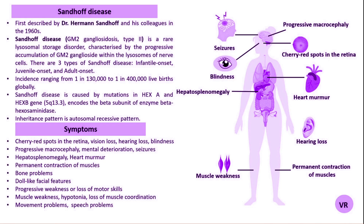Individuals with Sandhoff disease will have abnormally low or absent activity of both enzymes. Diagnosis often involves measuring the activity of HexA and HexB enzymes in blood or tissue samples; reduced enzyme activity indicates Sandhoff disease. Analysis of urine for increased levels of certain oligosaccharides can also help support the diagnosis. Genetic testing confirms the diagnosis by identifying mutations in the HexB gene, and identifying biallelic pathogenic variants in HexB provides a definitive diagnosis.